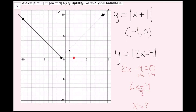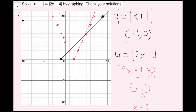Going up 2 and left 1 from the vertex, I can already see the first point of intersection right away. I continue plotting points — up 2, right 1 — and then draw my rays. The two lines of the absolute value functions are now graphed.